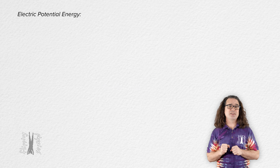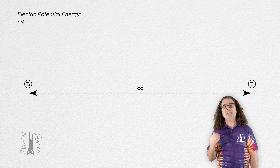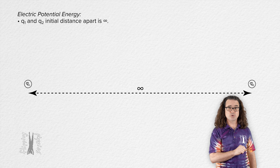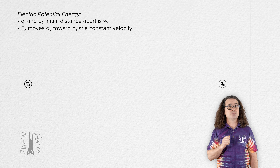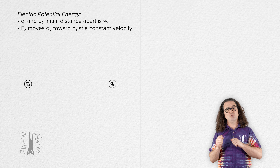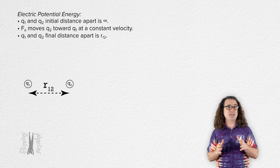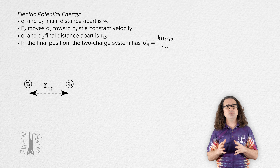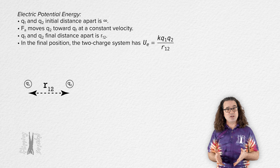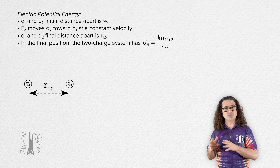Let's say there exists one point charge in the universe and let's call it charge q1. Infinitely far away from that charge, there now exists a second point charge q2. An external force moves q2 at a constant velocity such that the final distance between the two point charges is r₁₂. That two-charge system now has an electric potential energy which is equal to the Coulomb constant k times charge 1 times charge 2, all divided by the distance between the two charges, r₁₂.